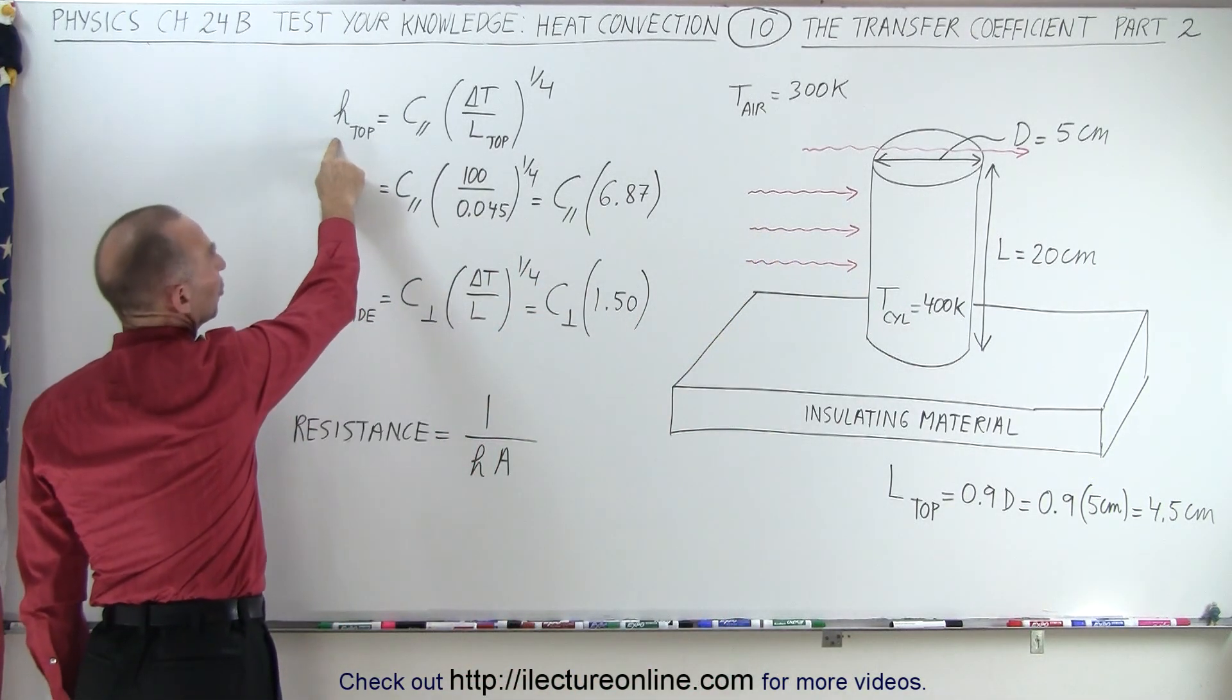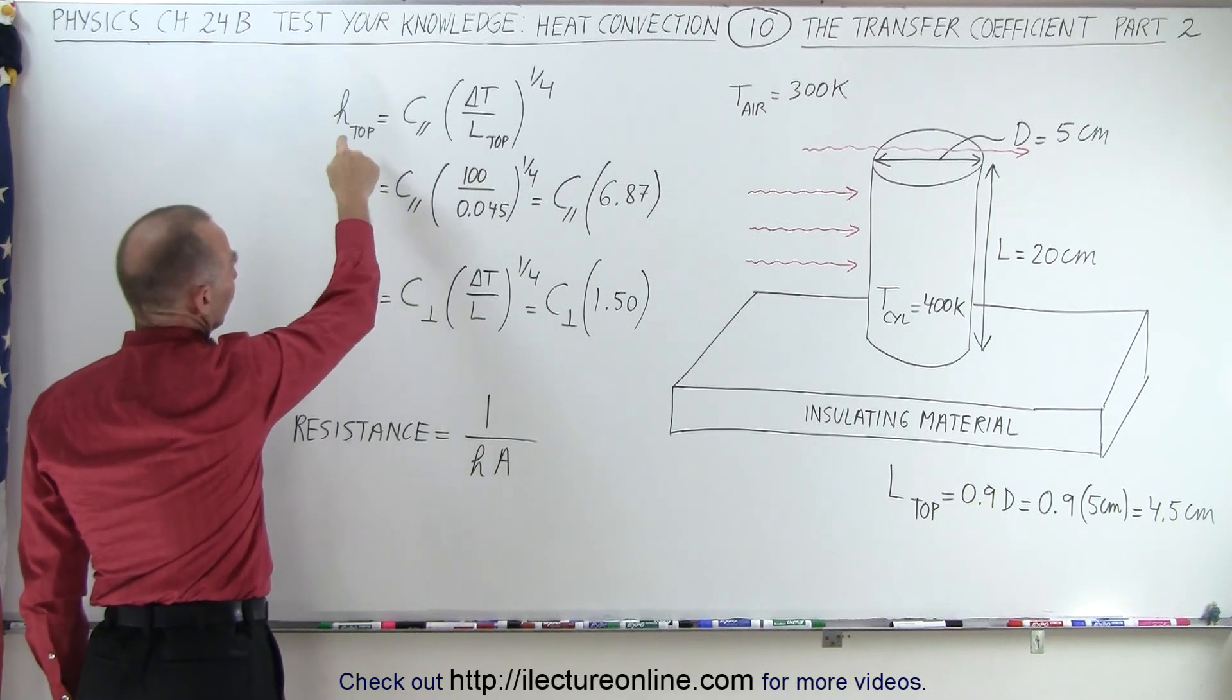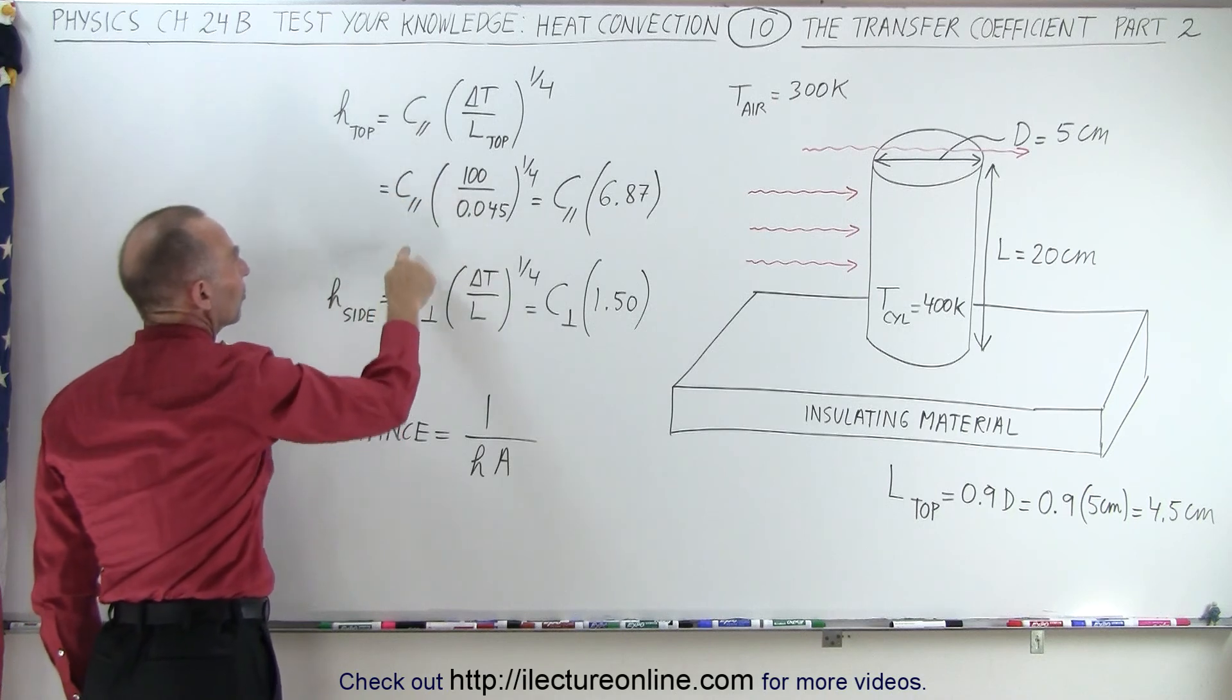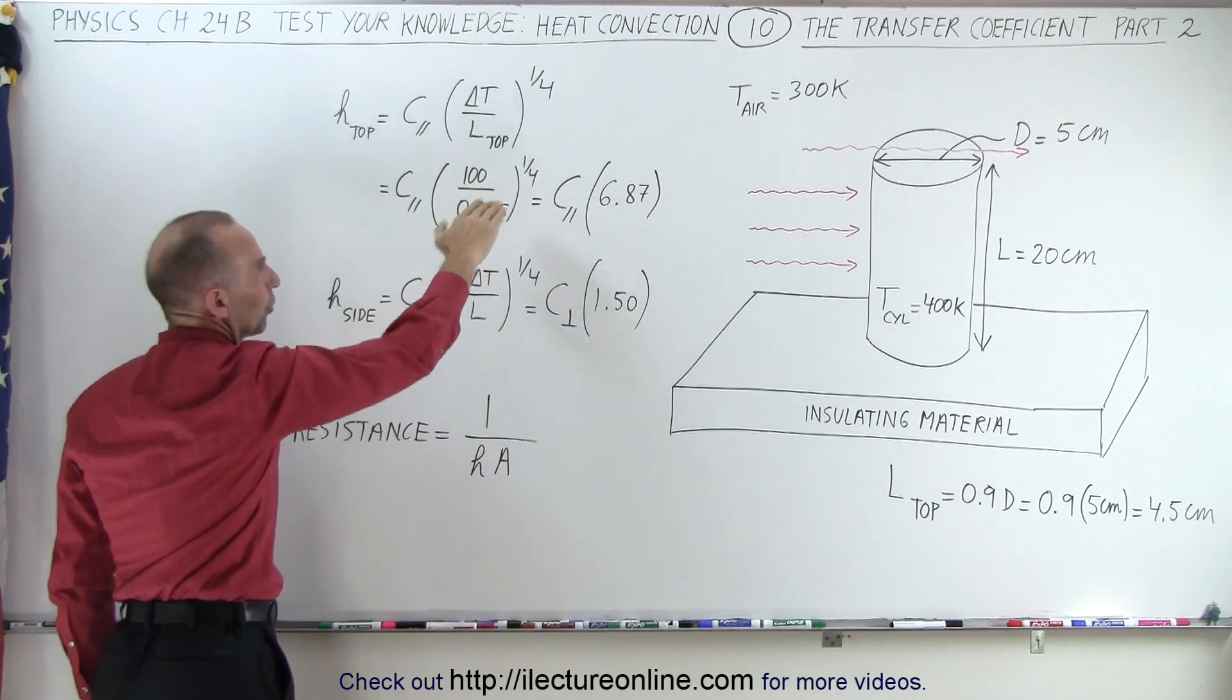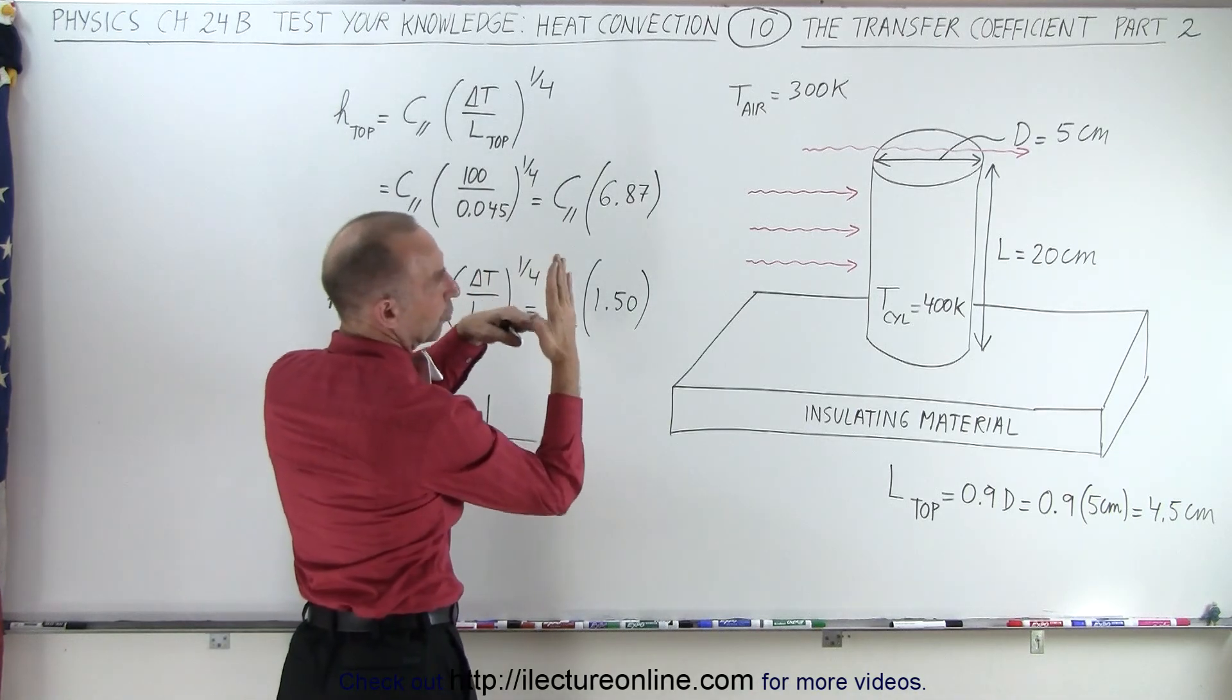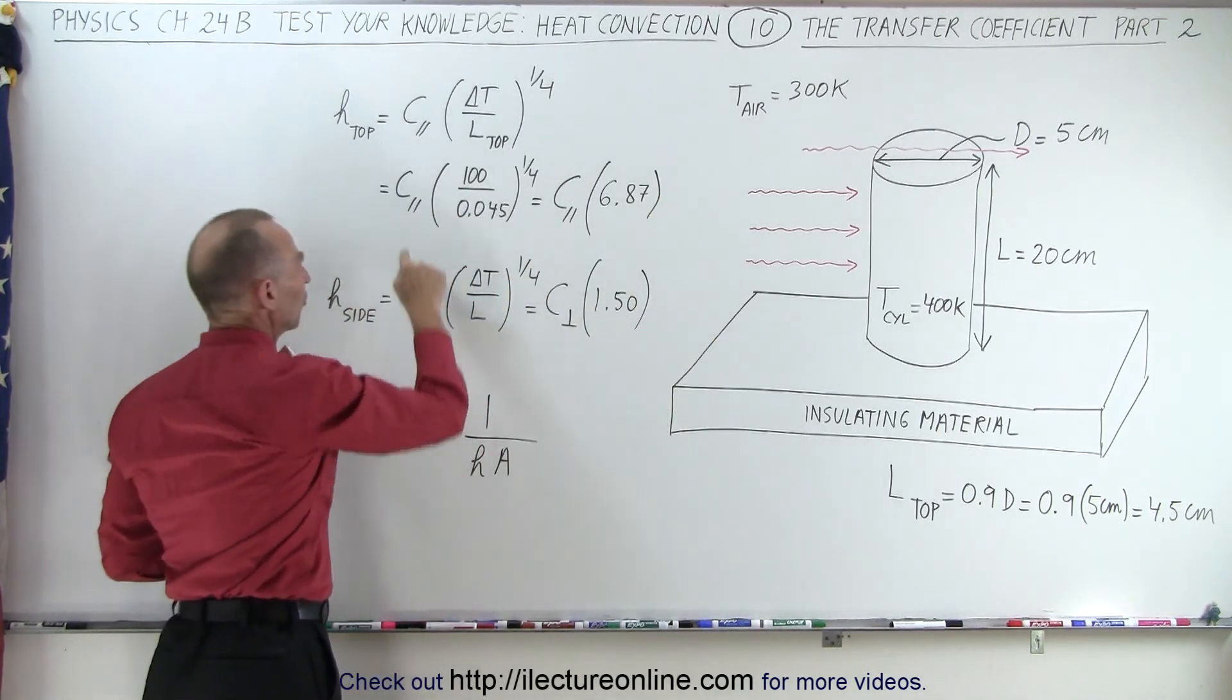Now notice we have different transmission coefficients or transfer coefficients for the top and the side, because we'll have a different constant here for the parallel flow, the flow that's parallel to the side and the flow that's perpendicular to the surface of the cylinder.